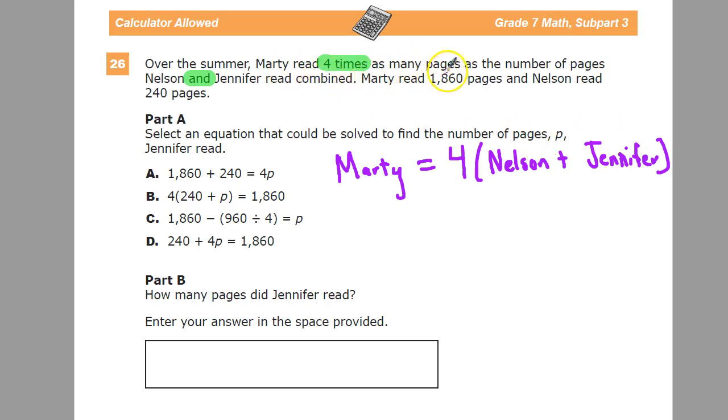What we need to do now is substitute in values that are provided. So Marty has 1860 as pages, not as a year. Nelson has 240 pages. And then for Jennifer, there's no number because we haven't found it yet, but there is a variable p.